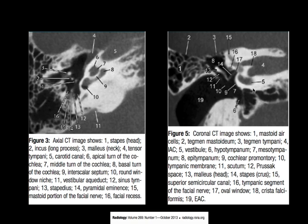Coming to the anatomy of the middle ear cavity — you can see various structures labelled, as given in the RSNA journal. You can see the cochlear promontory very well, the tympanic membrane, and the stapes getting attached to the oval window. You can also see the tympanic segment of the facial nerve. This is the cochlea, with the basal turn, middle, and apical turns visible.